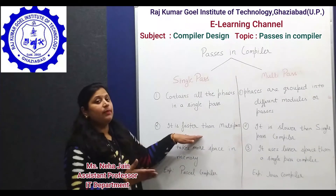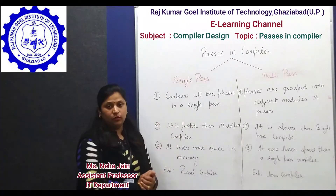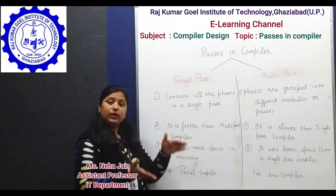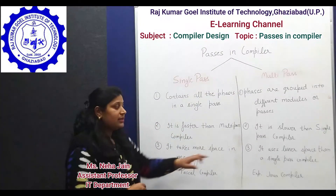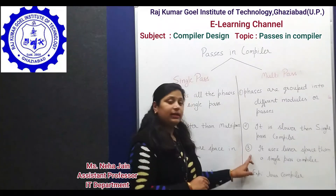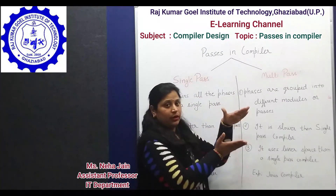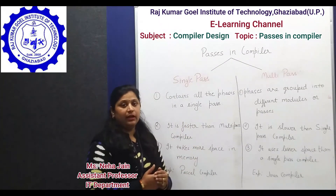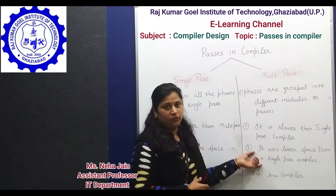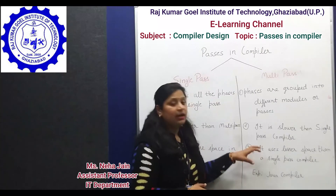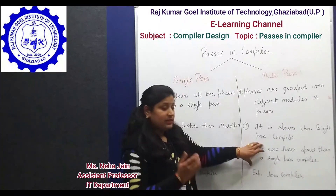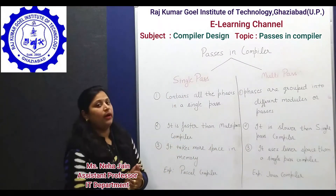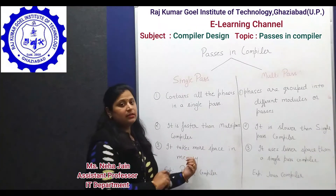The whole code of a single-pass compiler is loaded into main memory, so if you have 1,000 or 2,000 lines of code, you need that much space in main memory. In a multi-pass compiler, only one pass is loaded at a time. If you have 1,000 lines of code divided into 4 parts, approximately 250 lines will be loaded at a time, then deleted. So less memory space is required compared to a single-pass compiler.